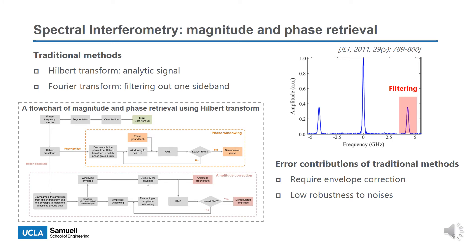Traditional methods to retrieve magnitude and phase in spectral interferometry include the Hilbert transform-based method and the Fourier transform-based method, which are equivalent in principle. However, the procedures of traditional methods can be really complicated as shown in the left figure. When using traditional methods, some factors including envelope correction and poor robustness to noise may cause errors in the retrieved magnitude and phase. So, is there a better method to retrieve magnitude and phase in spectral interferometry?